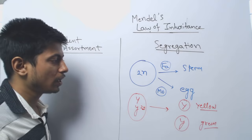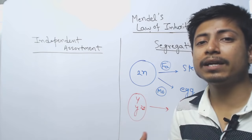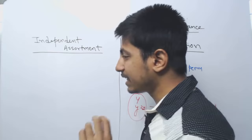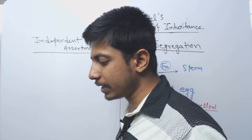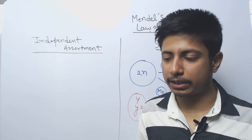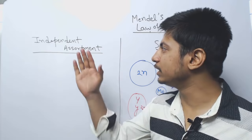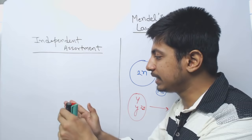On the other hand, in the case of independent assortment, we are talking about more than one characteristic — two or more traits. At least two traits are required for applying the law of independent assortment. Mendel says that if we are considering two different characteristics during gametogenesis, those two characteristics will not influence one another. They will be transferred to the next generation without any interaction or linkage between themselves.